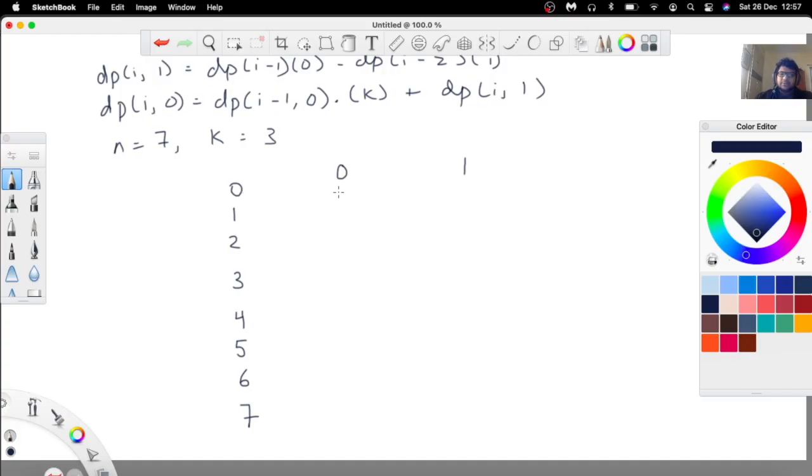Let me just write down the recurrence cleanly here. dp(i, 1) equals dp(i-1, 0) minus dp(i-2, 1). And dp(i, 0) equals dp(i-1, 0) multiplied by k plus dp(i, 1). So let's try to solve this for a test case. Let's try to solve for 7, 3. n equals 7, k equals 3. So let's calculate the DP for 7 and 3. So first our base cases are as follows. So dp(0, 0) equals 1, dp(0, 1) equals 0, dp(1, 0) equals 4, and dp(1, 1) equals 1.